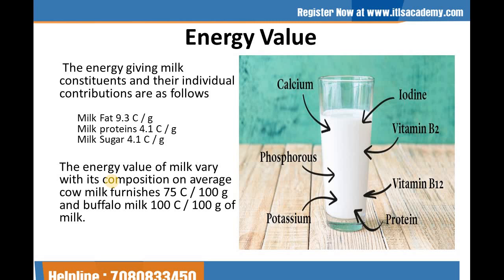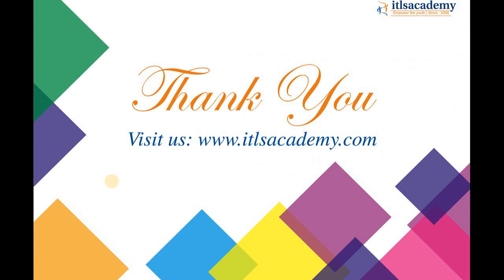The next is the energy value. The energy-giving milk constituents and their individual contributions are as follows: milk fat is generally 9.3 calories per gram, milk protein is 4.1 calories per gram, and milk sugar is 4.1 calories per gram. The energy value of milk varies with its composition; on average, cow milk furnishes 75 calories per 100 grams, and buffalo's milk is 100 calories per 100 grams. Thank you for being with us. For more information, please log on to our website at www.itlsacademy.com.